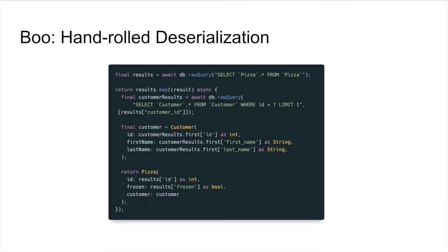One way that you could create data is you could hand-roll your own SQLite query. In this case we're going to be using SQL flight: make the select request, run through everything, and then we have to make the association request and then construct the association model.